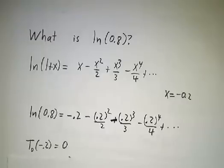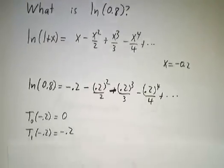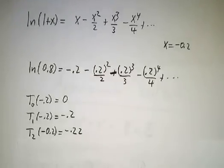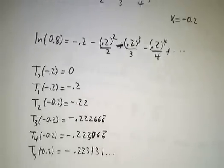And if you just use the crude approximation, the value at x equals 0, you get 0. First order, you get 0.2. Second order, you get 0.22. And the more terms you add, the more accurate you get.